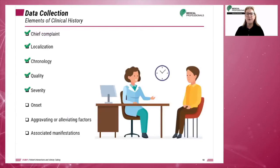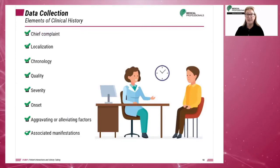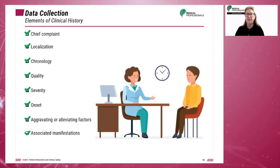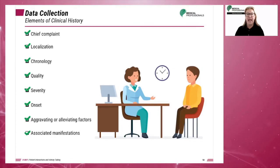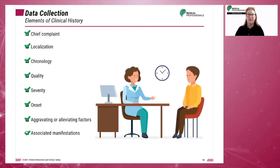There are a number of basic elements of clinical history. These include the chief complaint, localization and chronology, quality, severity and onset, aggravating or alleviating factors, and associated manifestations.